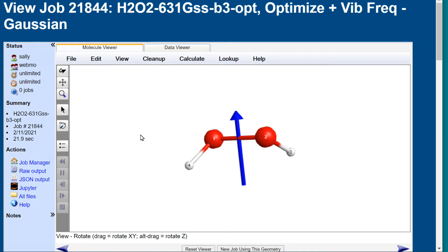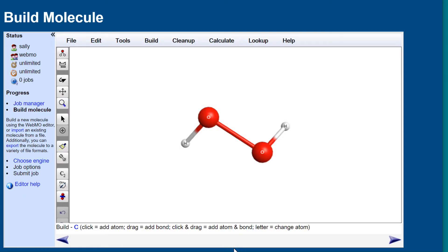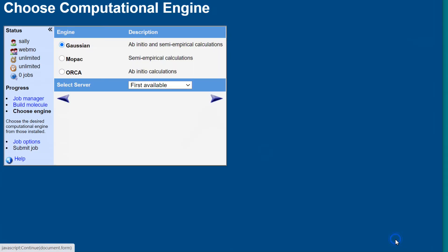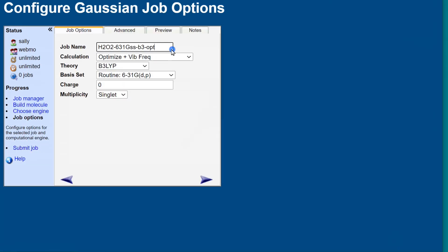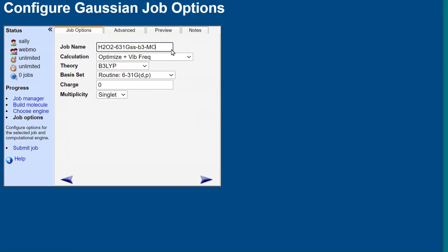To view the dipole vector, click the icon. Notice how you can see the whole vector only by rotating the molecule. The dipole vector is formed by alignment of the oxygen lone pairs and the vertical components of the OH bond dipoles — the horizontal components cancel out.